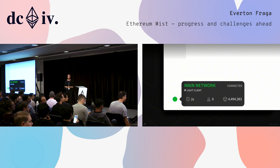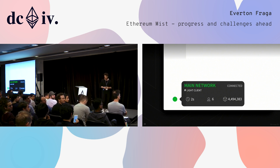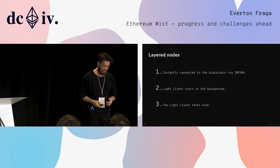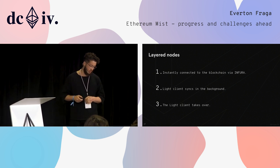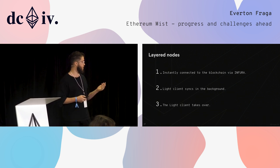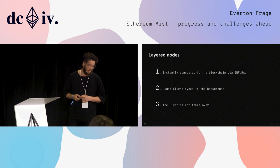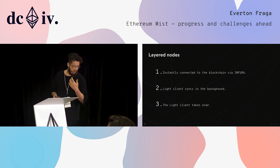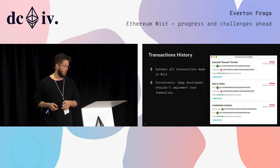Hi Peter — that's the person responsible for the lite client end of Go-Ethereum. So we've got what we call layer nodes: instantly connected to the blockchain via a remote provider, with lite syncing in the background, and when it's up to date, it just takes over the connection.